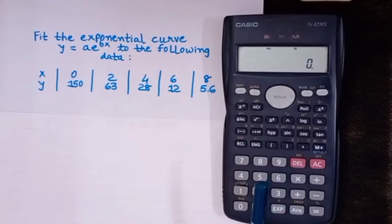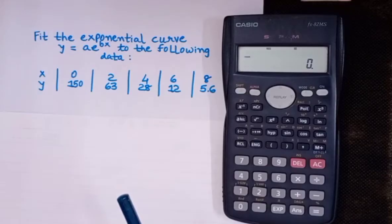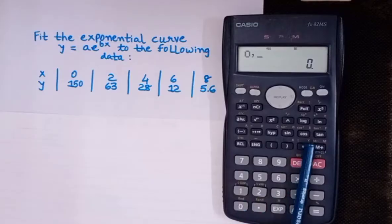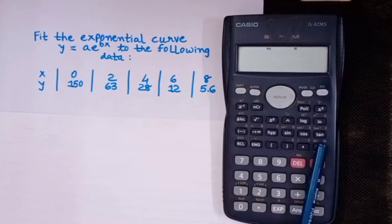After that, input the values of x and y. The first value is 0 and 150, so I'll write it like this: 0 comma 150, then press M plus.